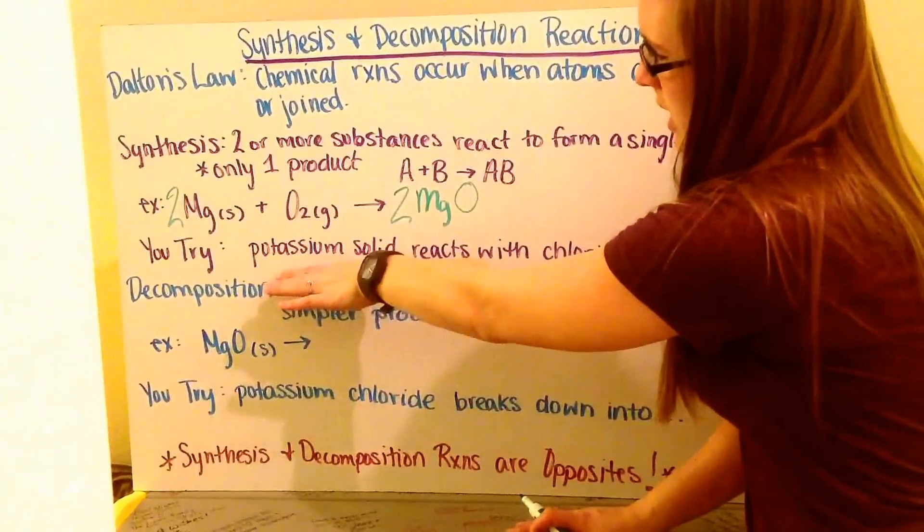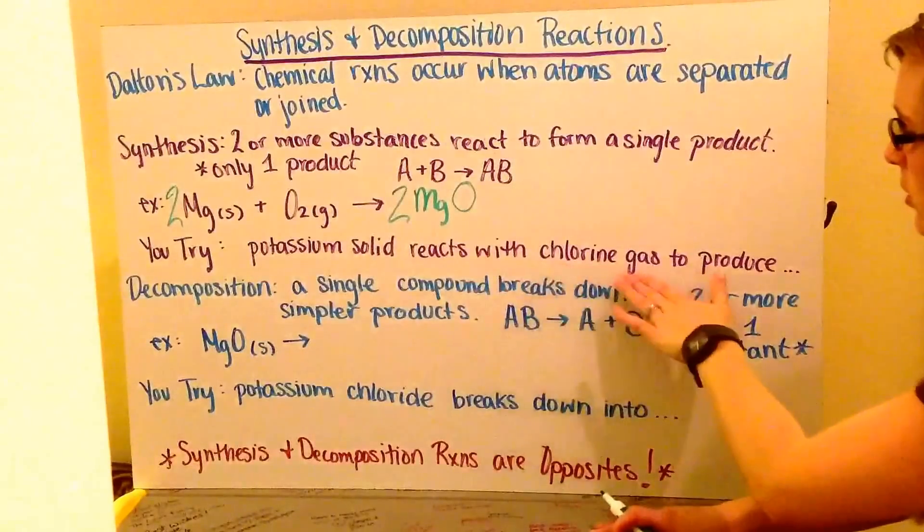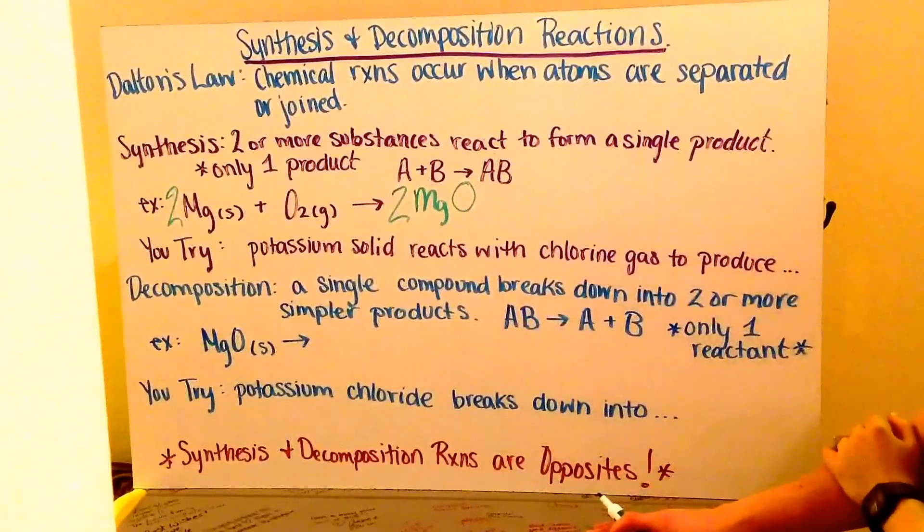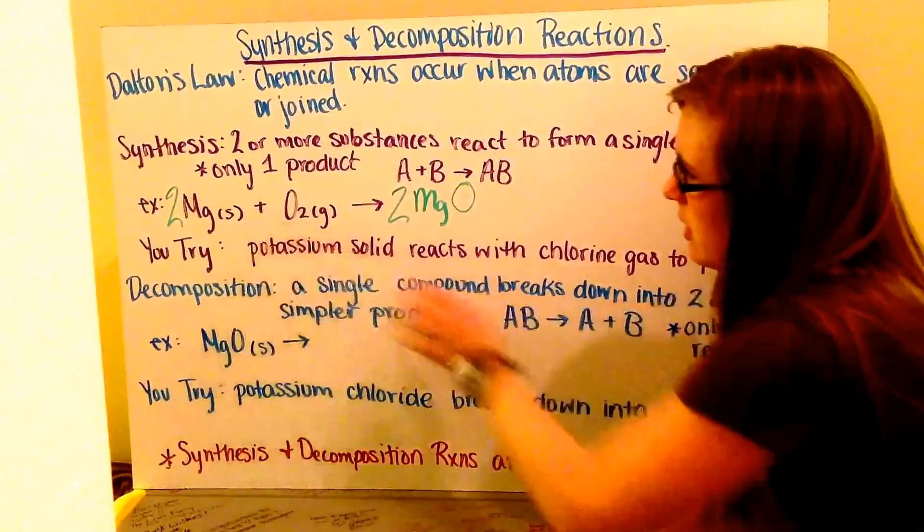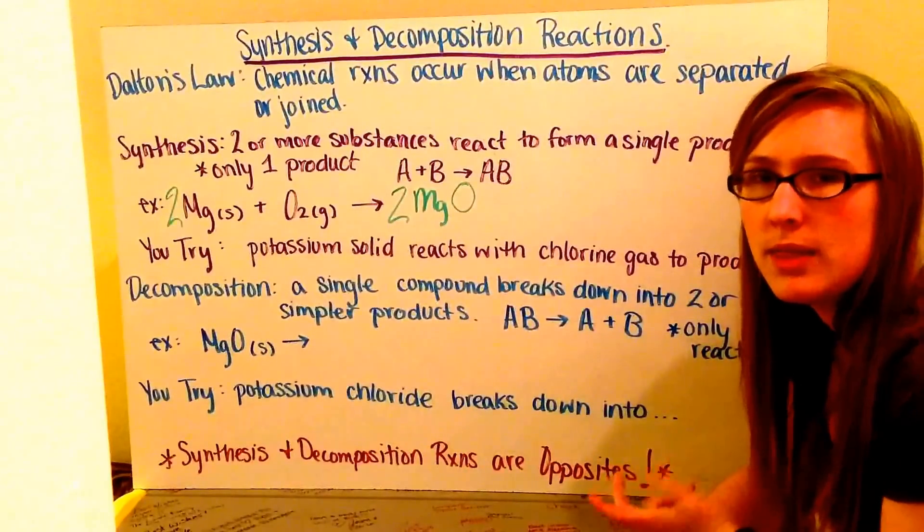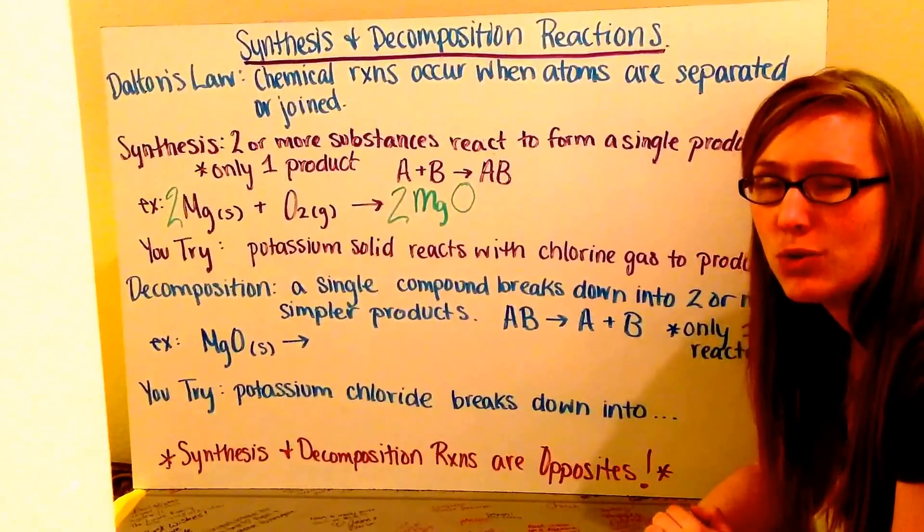Go ahead and try writing the reaction when potassium solid reacts with chlorine gas. What will they produce? First translate the names into their chemical formulas, then predict their products. Once you have that, go back and balance your reaction.